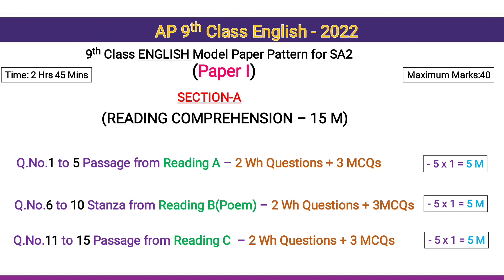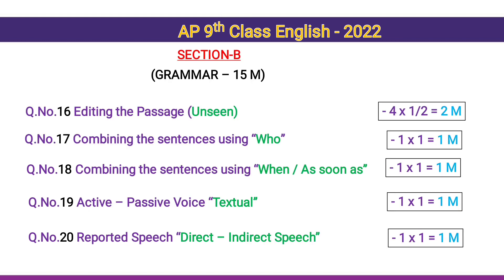Questions 6 to 10 are from a stanza from Reading B poem — 2 WH questions and 3 MCQs, 5 ones for 5 marks. Questions 11 to 15 are passages from Reading C — 2 WH questions and 3 MCQs, 5 ones for 5 marks. Section B is Grammar for 15 marks.